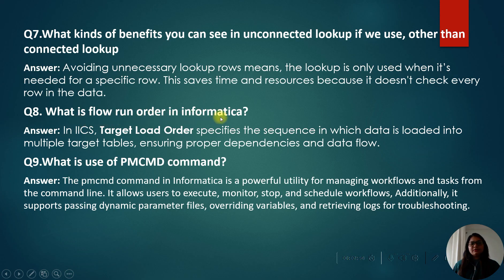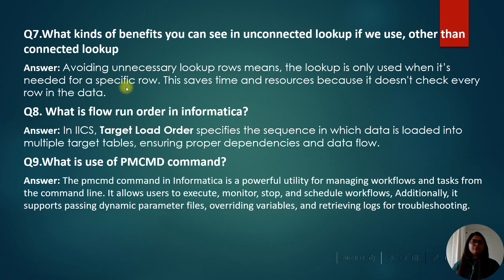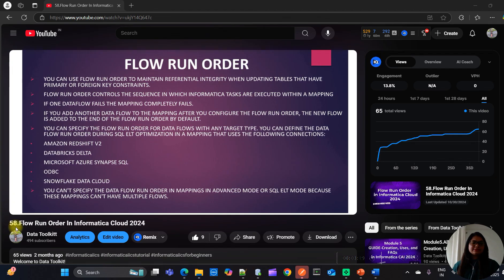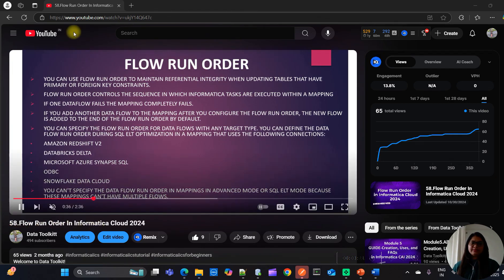Next question: what is the flow run order in Informatica? The flow run order, also called target load order, specifies the sequence in which data is loaded into multiple target tables, ensuring proper dependency and data flow. For more detail, you can check the 58th chapter on my YouTube channel where I have covered everything about flow run order.